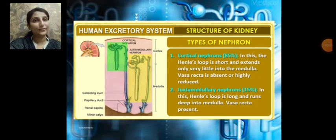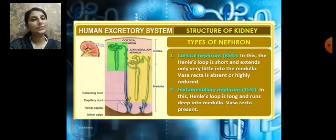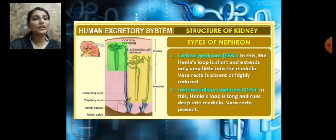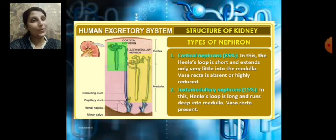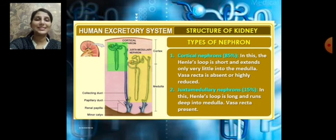There are two types of nephrons: cortical nephrons and juxtamedullary nephrons. Cortical nephrons are the most abundant, constituting about 85%, while juxtamedullary nephrons constitute only 15%. In cortical nephrons, Henle's loop is short and extends only slightly into the medulla, and the vasa recta is absent or highly reduced. In juxtamedullary nephrons, Henle's loop is very long, extends deep into the medulla, and the vasa recta is present.